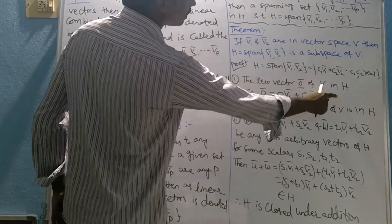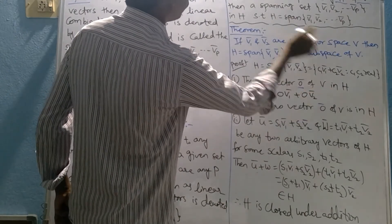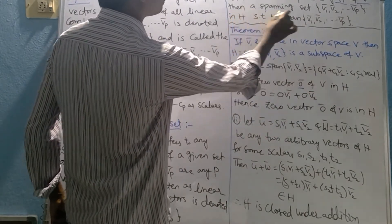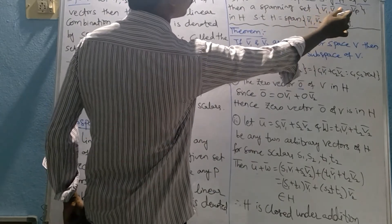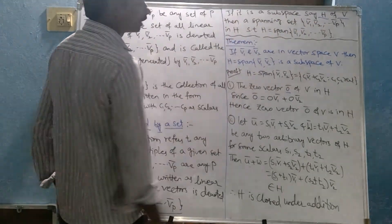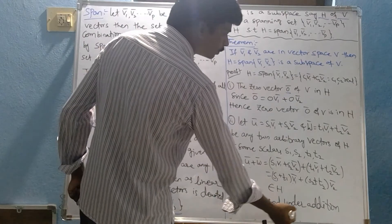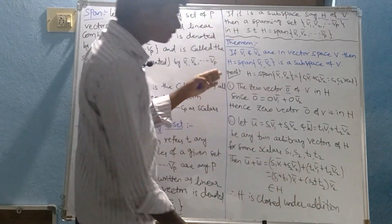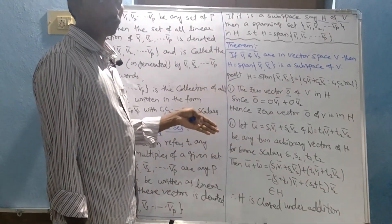Now this belongs to H. We are using this definition: a spanning set V1 bar, V2 bar, so on Vp in H. Therefore, H is closed under addition. This is the second property completed.